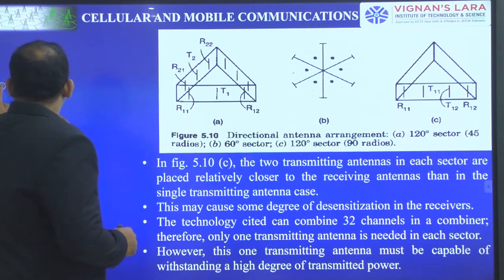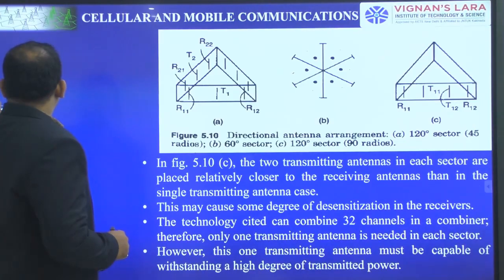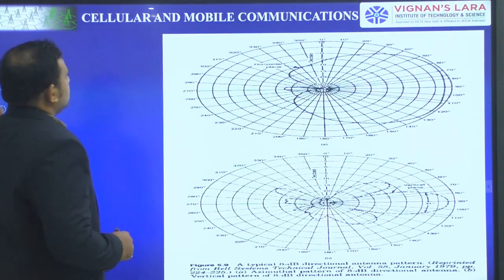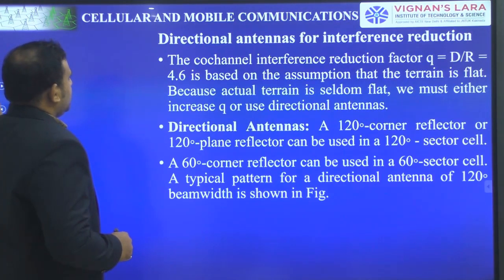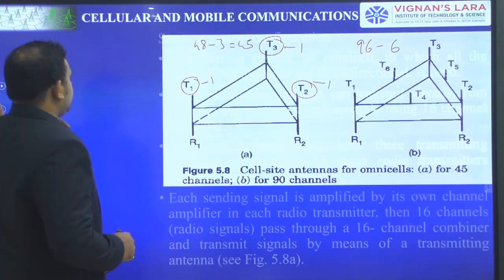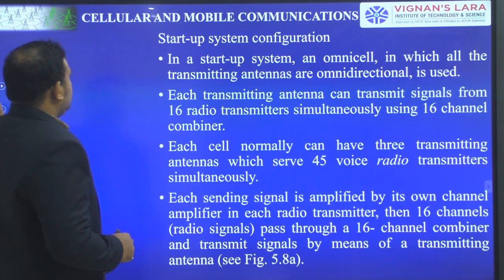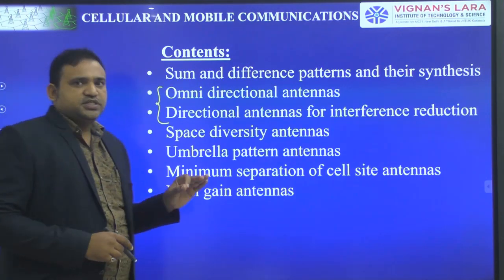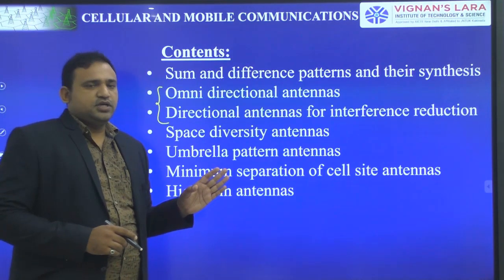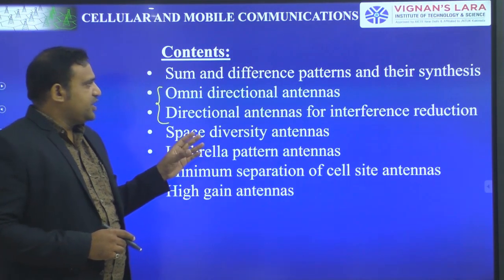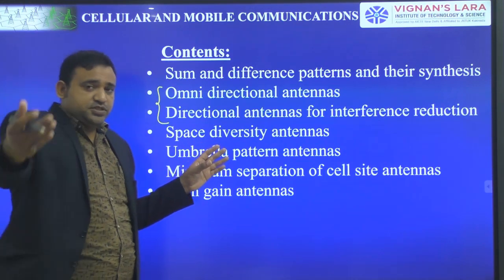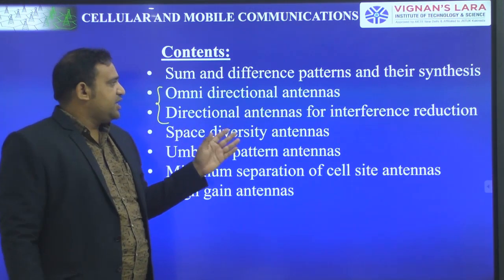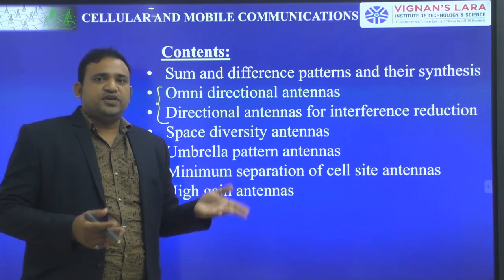That's it about today. We have discussed about two topics with respect to Unit 4: the first one is about omnidirectional antennas in a startup system configuration, and the second is about directional antennas for interference reduction.